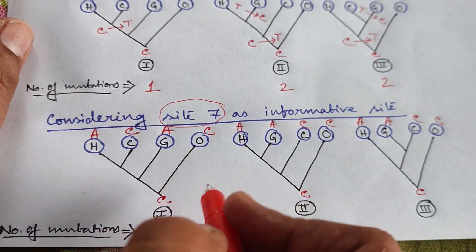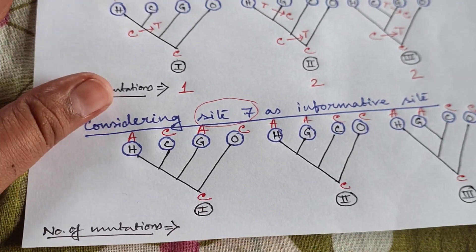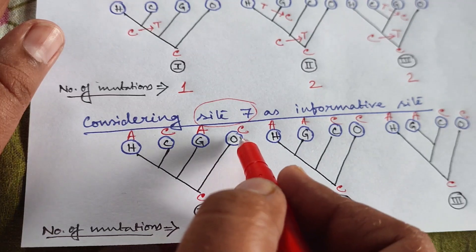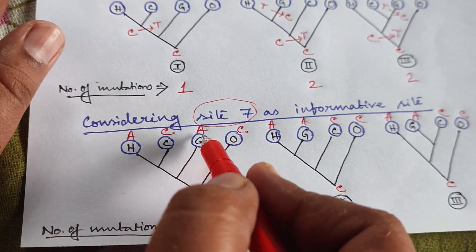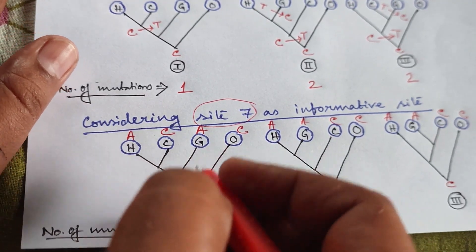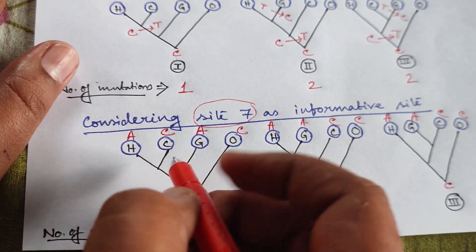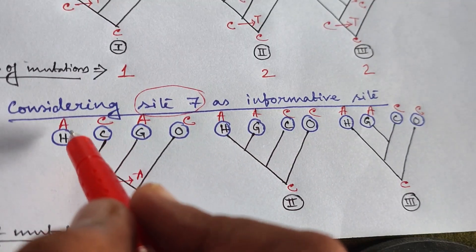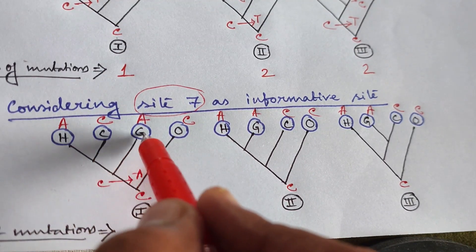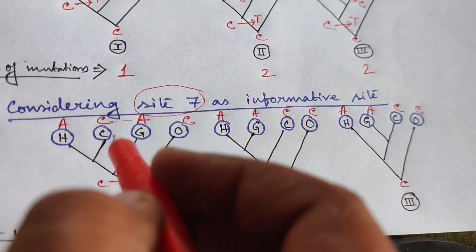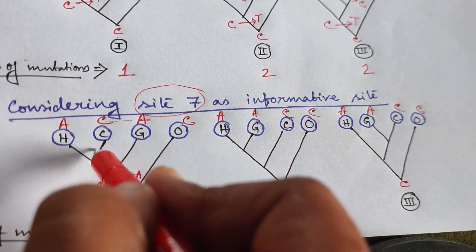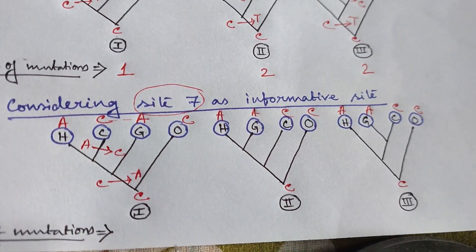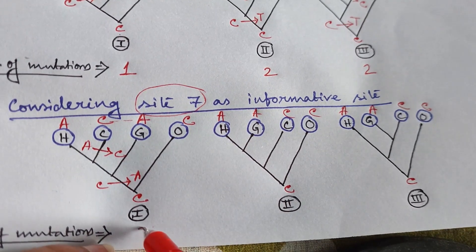For tree 1 at site 7: C to C for orangutan — no change. But there is a C to A change needed. Draw a mutation C to A on the branch so that human, chimpanzee and gorilla all become A, then draw another mutation A to C to convert chimpanzee back to C. Lowest number of mutations = 2 for tree 1.